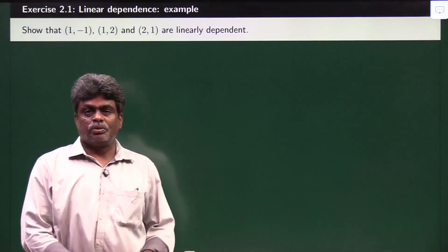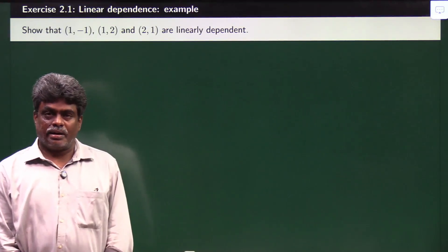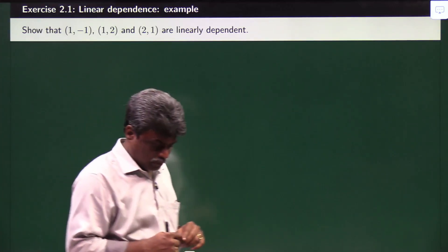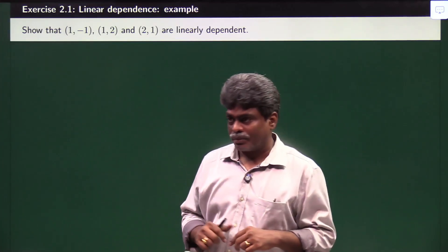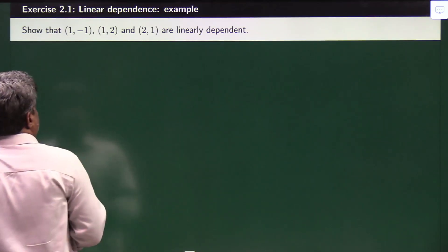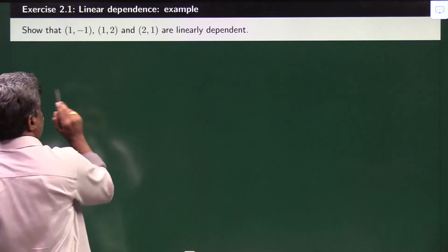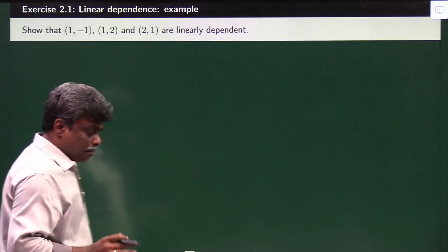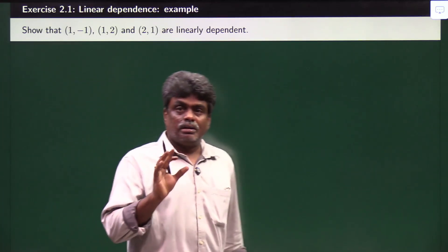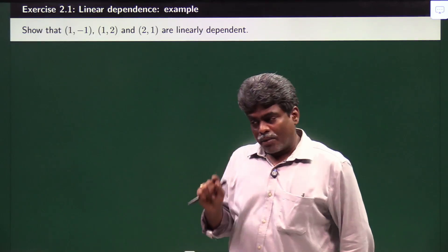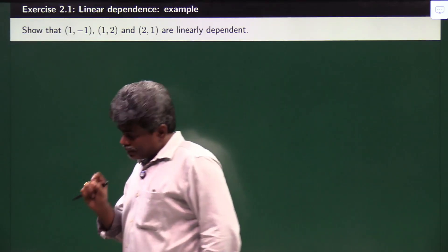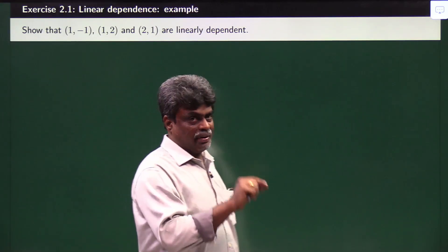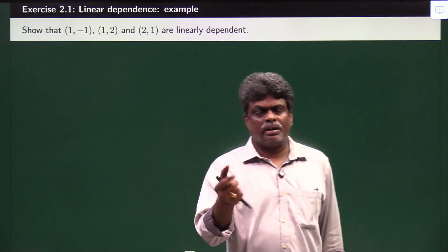Welcome to UV Physics Academy. Here we are discussing the solutions of quantum computation — this is the first question. They are asking to show that these vectors are linearly dependent. Let n be the number of vectors given and m be the dimension of the vector space or Hilbert space.